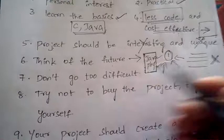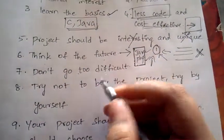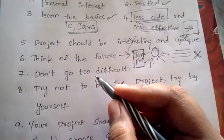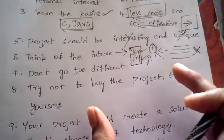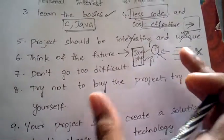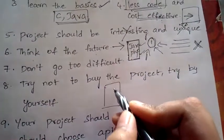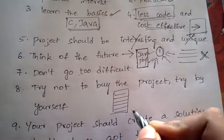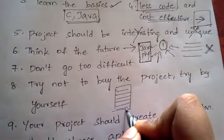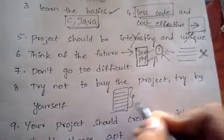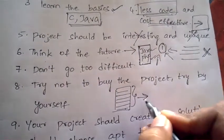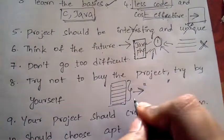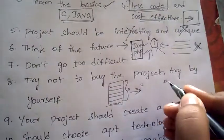Next is don't go too difficult. Some students are very enthusiastic and start selecting a very difficult project. Up to the blueprint stage it is okay, but once the blueprint is finalized, you have to make it practical and start developing the project. If you select the most difficult project, no one is going to help you and you'll have to work very hard.